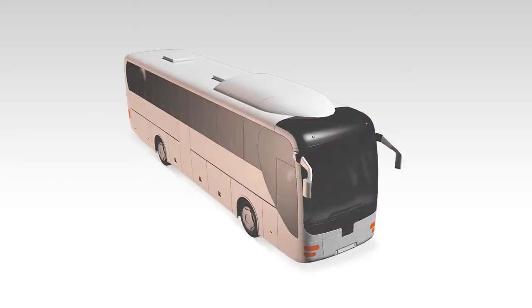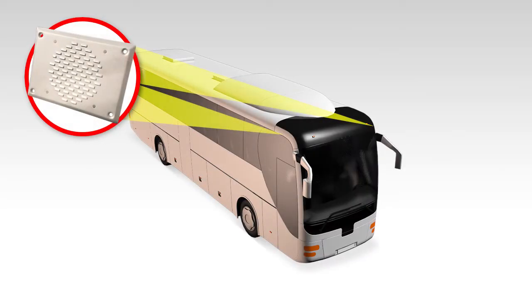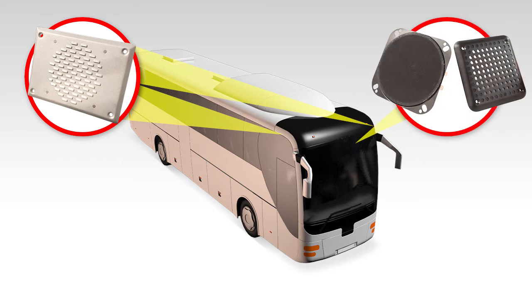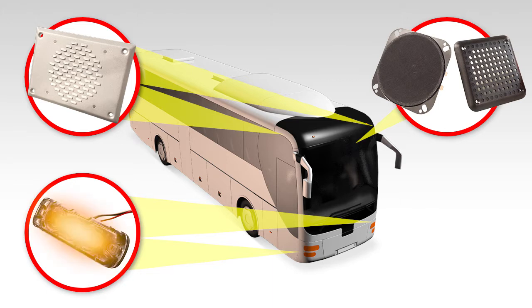The system's components include an external speaker, which gives an external audible announcement to warn nearby pedestrians and cyclists, and an internal speaker, which plays an audible message to remind the driver to look both ways for pedestrians and cyclists. An amber visual LED flashes when the system is activated, giving pedestrians and cyclists a visual warning of the turning bus.